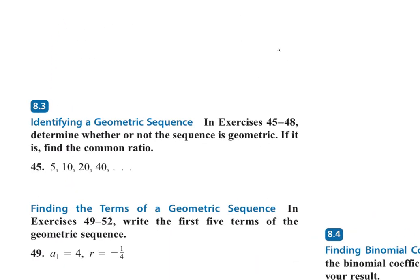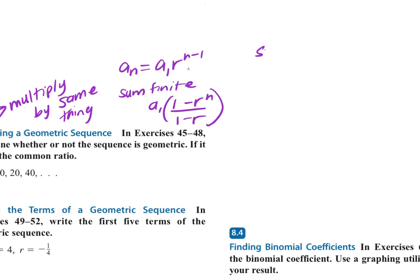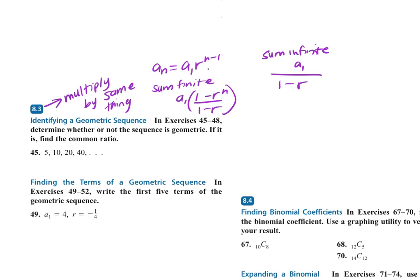Then came geometric sequences, where you multiply by the same thing every time. The formula for any term is AN equals A1 times R to the N minus 1. The sum of a finite geometric series is A1 times (1 minus R to the N) over (1 minus R). The sum of an infinite geometric series is A1 over (1 minus R). Again, none of these are given on a reference sheet — you need to know them.